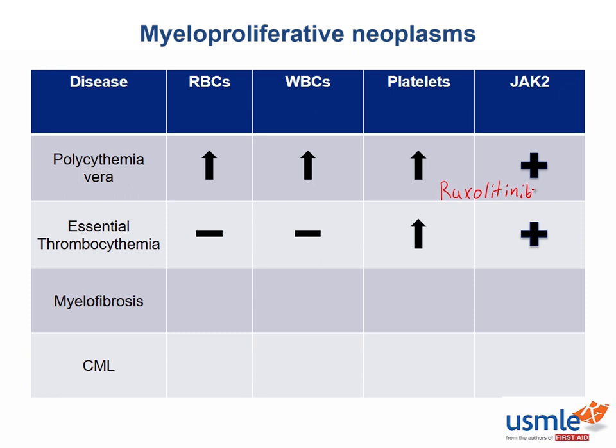In myelofibrosis, you will see a decrease in the red blood cells, and depending on the extent of involvement, you may or may not see the white blood cells and the platelets involved. The pathognomonic finding here is the teardrop cell on peripheral smear. You can remember this by thinking about the bone marrow crying because it's fibrosed. You may also see immature cells on the myeloid line as they are forced out of the bone marrow too early because of the fibrosis.